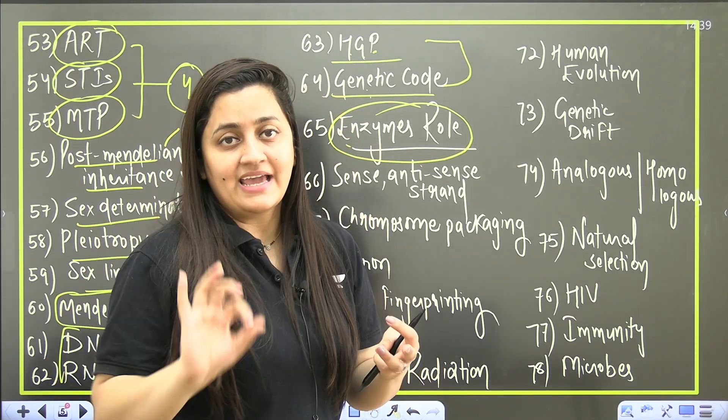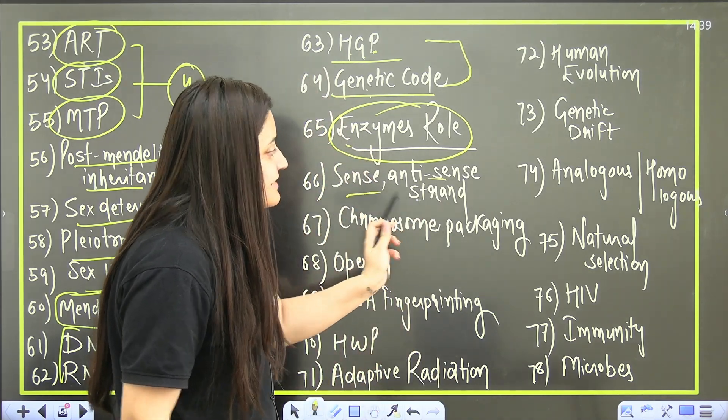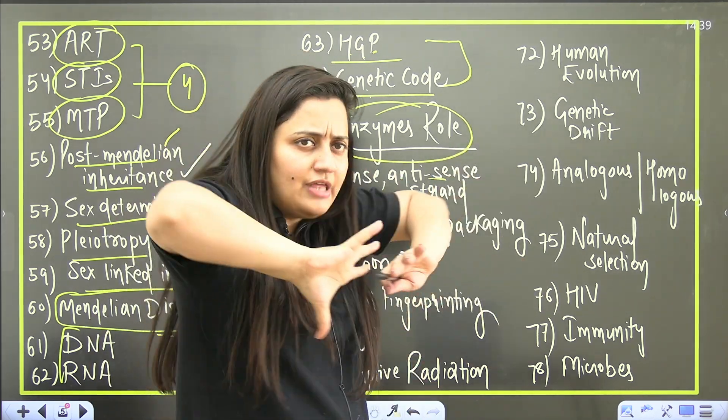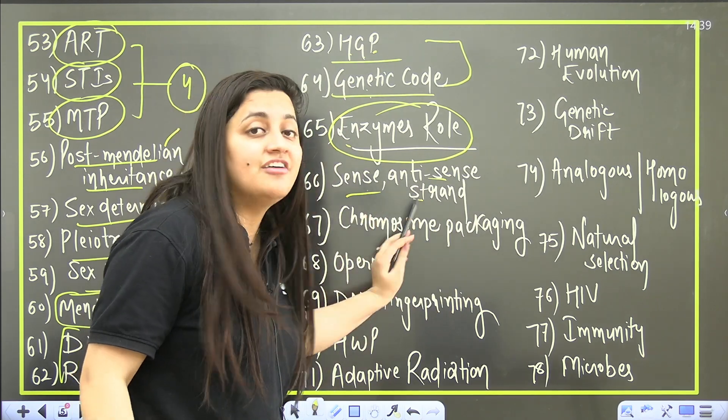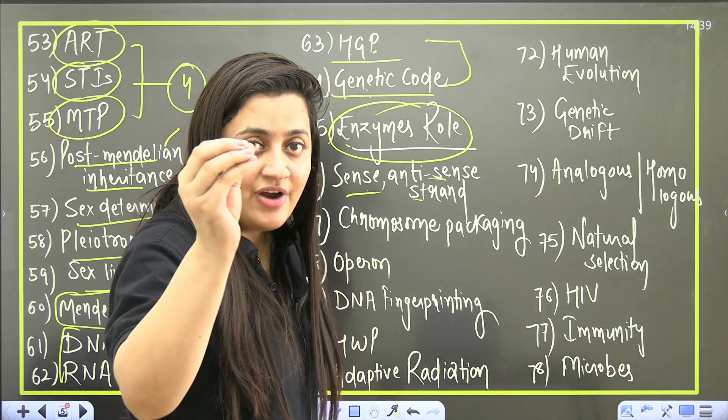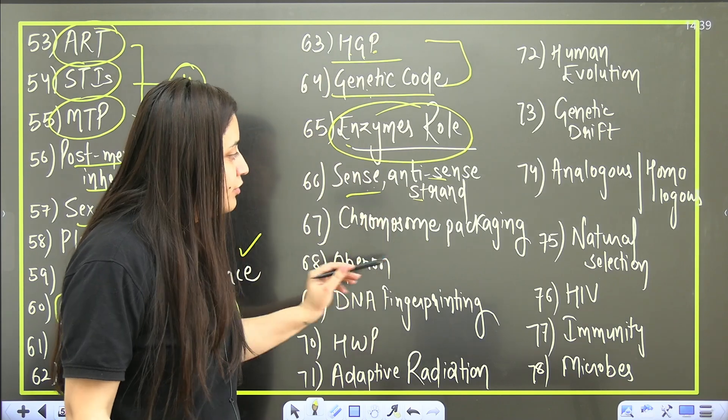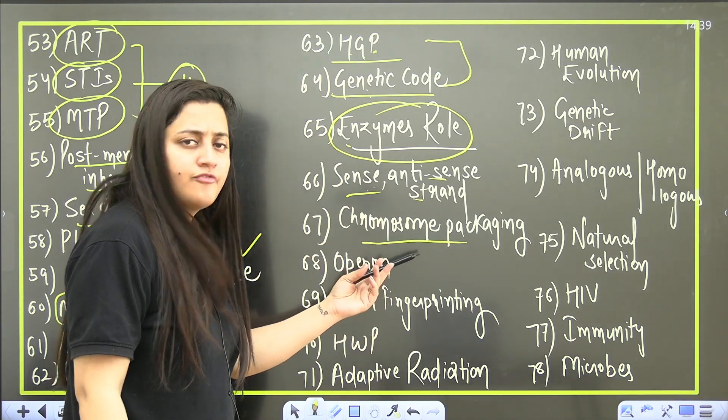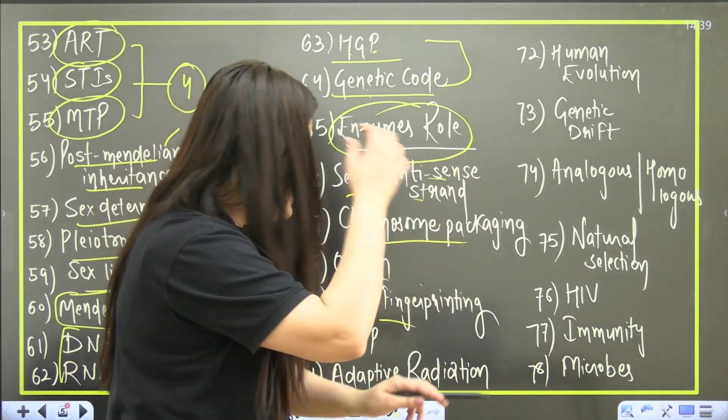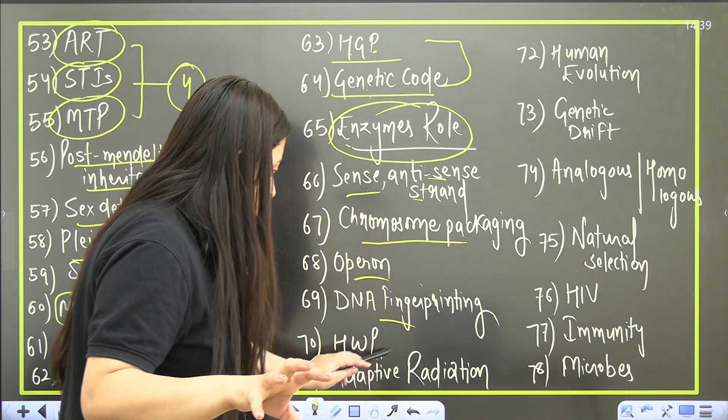Then sense, anti-sense strand - I'm picking up the definitions as well. It is not just the detailed topics, I'm picking up the definitions as well. Like in transcription we talk about the template strand, also known as your non-coding strand. Then packaging of chromosome - of course important, histone part will be covered. DNA fingerprinting - now in the next slide I have written that with fingerprinting always read the satellite DNA part.